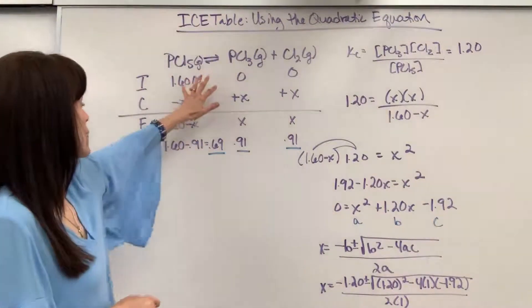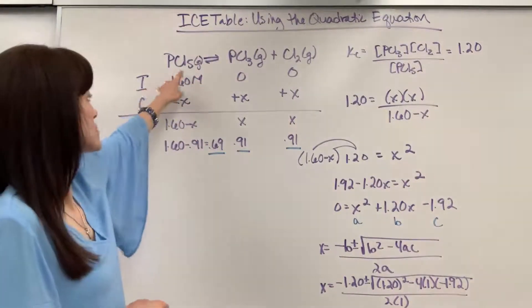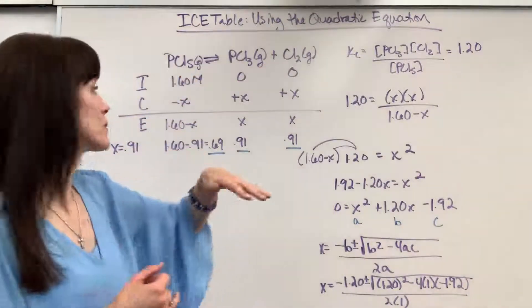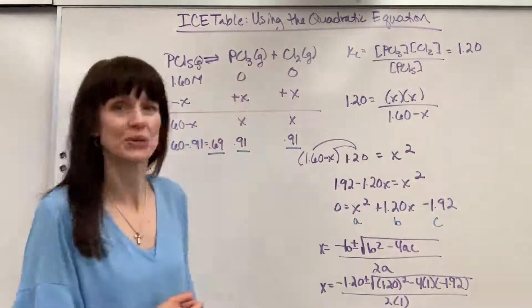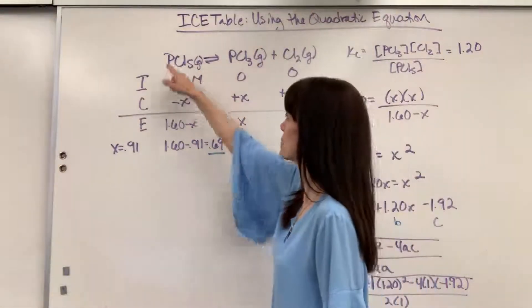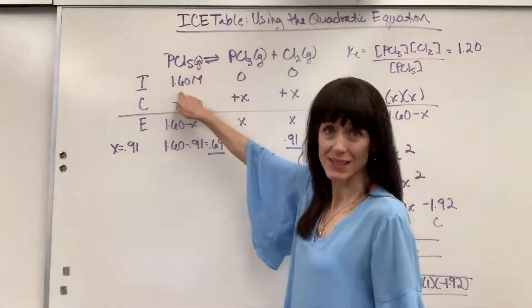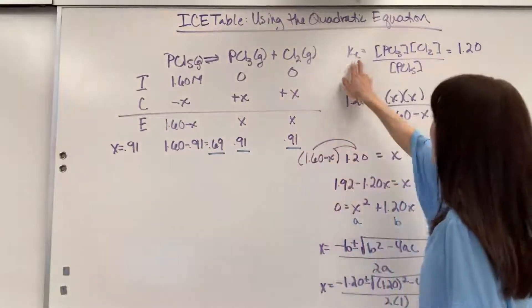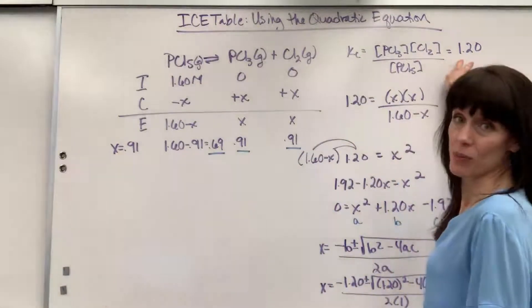Okay, so here is our equation. We have this phosphorus pentachloride is in equilibrium with the phosphorus trichloride and a chlorine gas. We are given an initial concentration of the phosphorus pentachloride of 1.6 and we're also given our Kc value is 1.2.